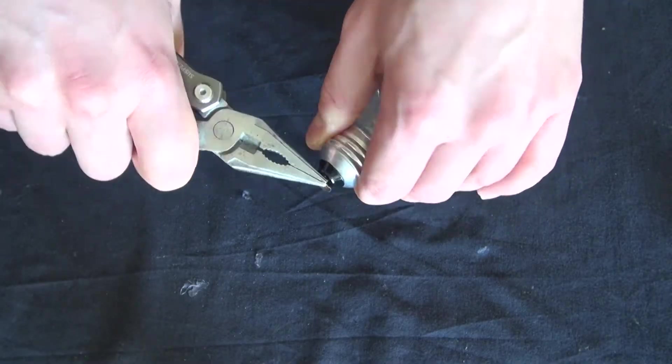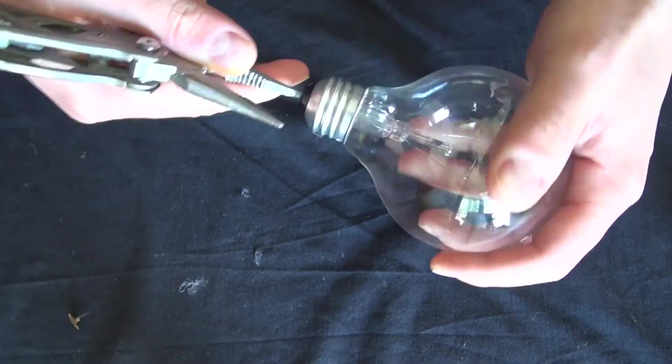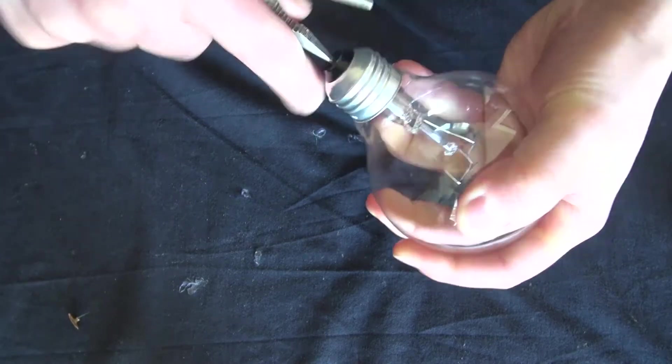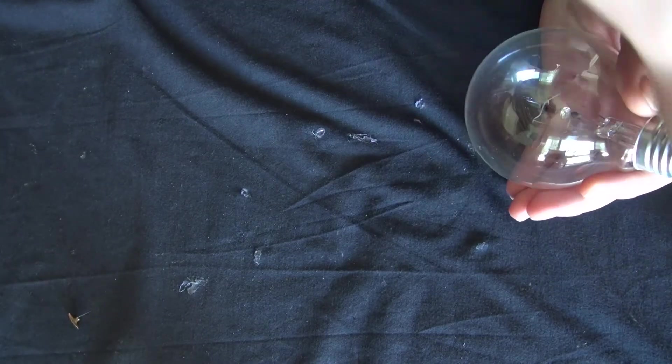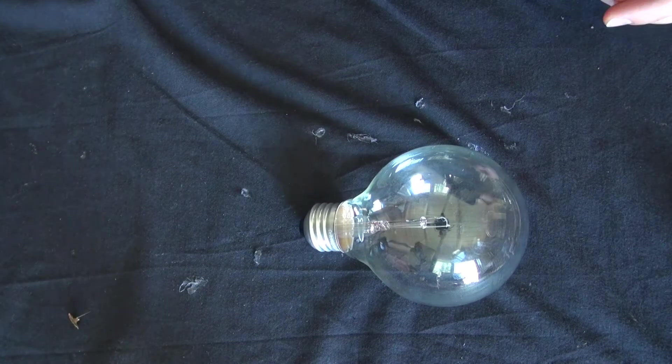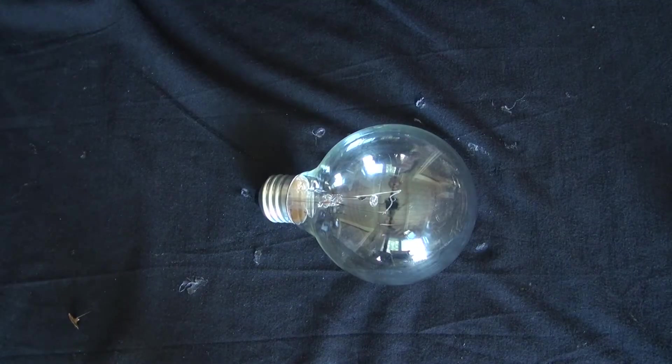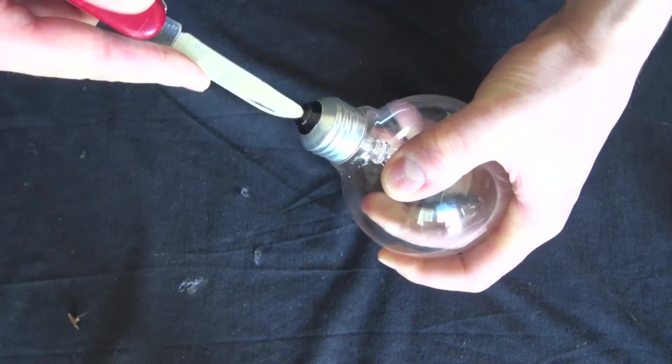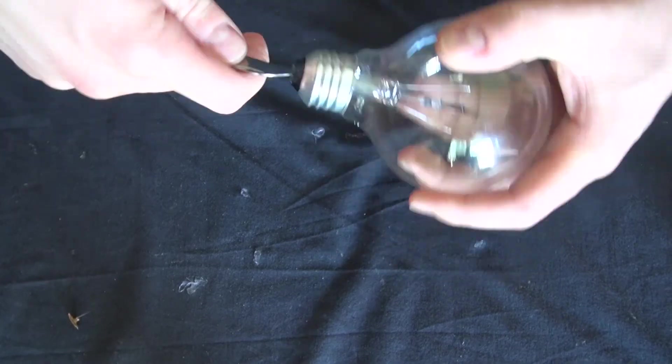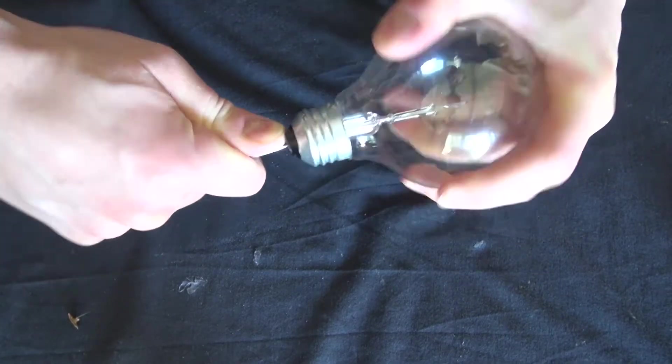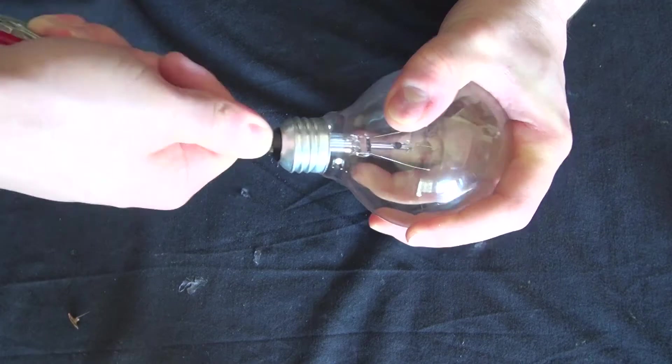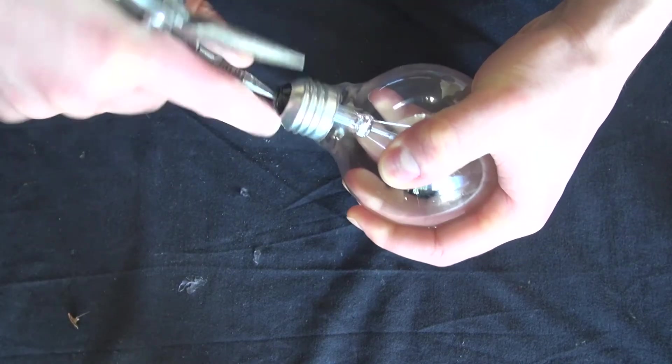Now I'm going to go ahead and remove the filament inside this light bulb. Now please, you should wear gloves when you do this because if you don't, you're at risk of potentially injuring yourself from the sharp shards of glass or even on the ceramic piece that I'm trying to break. It's very risky and very dangerous. I should have been wearing gloves when I did this.